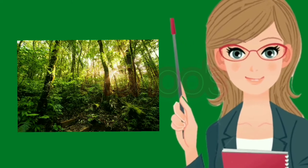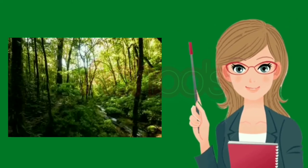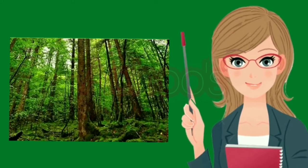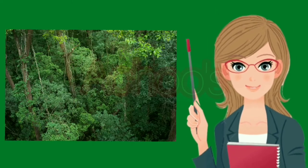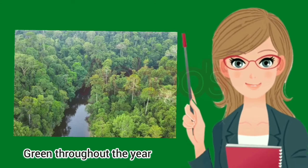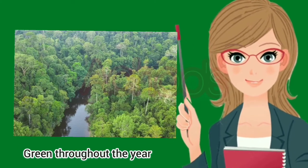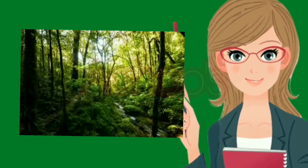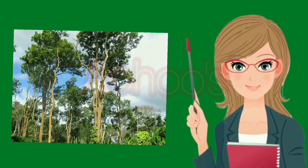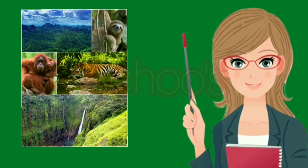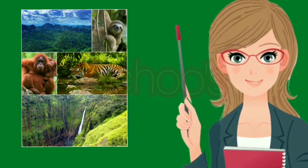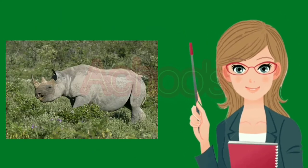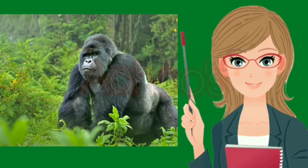These forests have a dense canopy of trees which does not allow enough sunlight to reach the ground. Hence, there is no carpet layer of grasses in these forests. The trees do not have a fixed time to shed their leaves, so these forests remain green all around the year and are referred to as evergreen forests. The main varieties of trees found here include ebony, rosewood, and mahogany. These forests are rich in wildlife — chimpanzees, rhinoceros, gorillas, elephants, deer, leopards, and bears inhabit these forests among other animals.